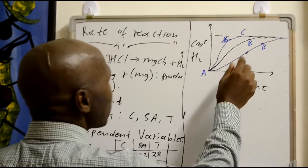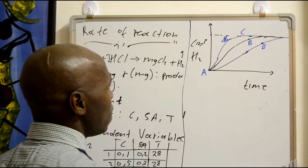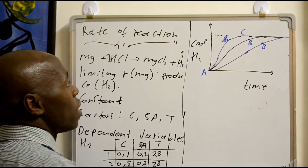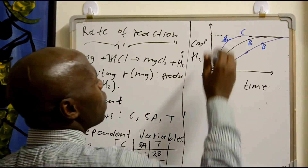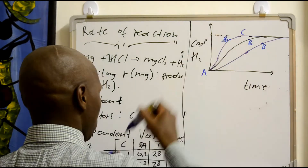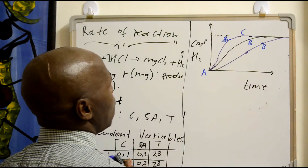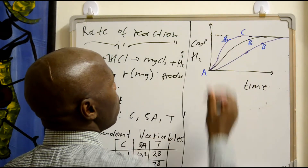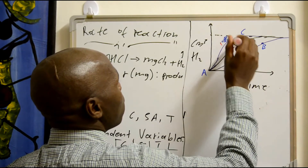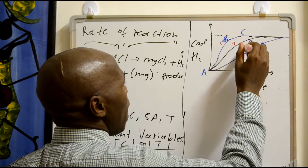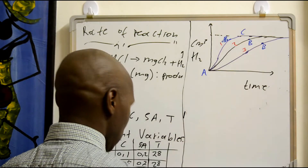So this graph is naso. This is experiment 1, experiment 2, experiment 3.